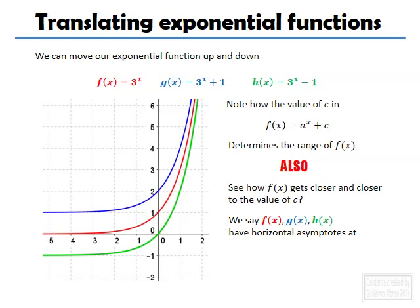In the case of the red one, we'll have horizontal asymptote at y equals 0. The blue one at y equals 1, and the green one at y equals minus 1.